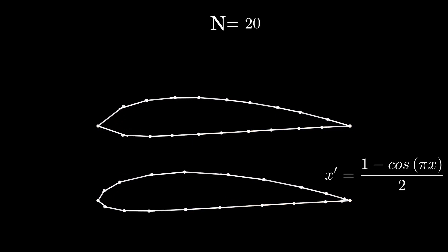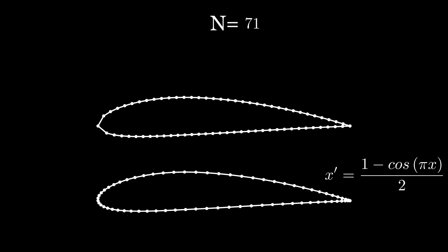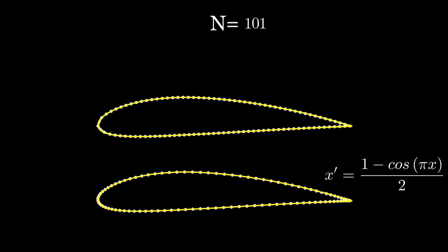As we increase the amount of panels to be used we see the leading edge never really gets its curve just right while the cosine spacing does. For this video we will be using the cosine spacing due to this reason.